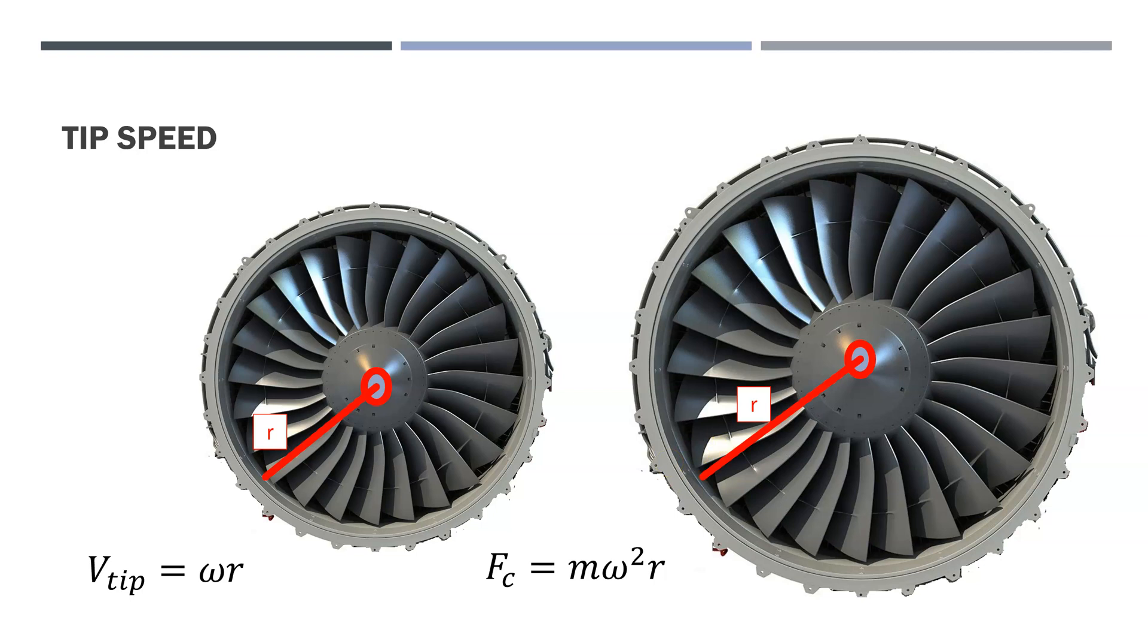So two things have happened. The technology on the blades, so they're beginning to use composite fan blades that are a little bit stronger, so they could resist the large centrifugal force.